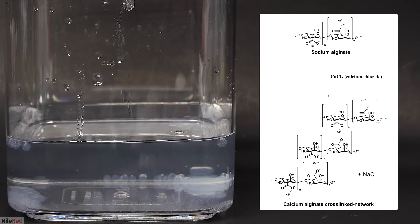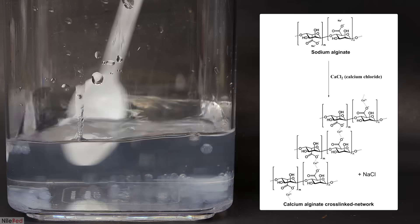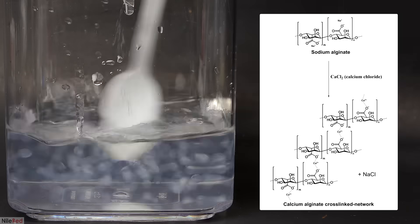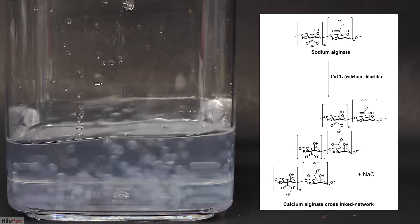What's happening here is a reaction between the sodium alginate and the calcium chloride. This leads to the formation of sodium chloride, as well as calcium alginate, which is insoluble in water.